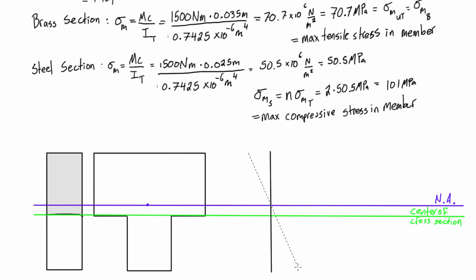So, it would look something like this, where it passes through 0 there, and this would be, this was 50, 50.5, and this was 70.7.